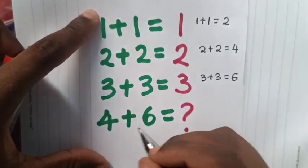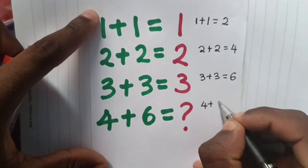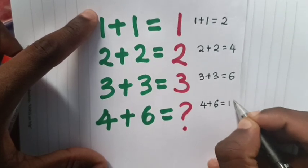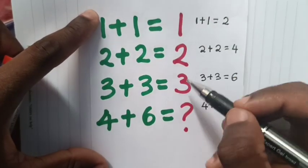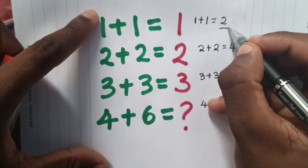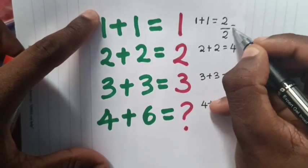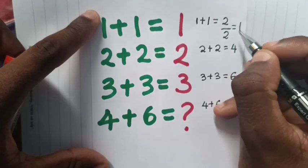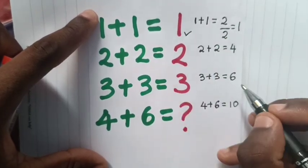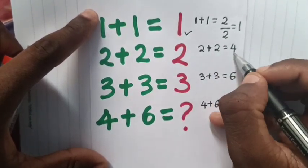4 plus 6 equals 10 in normal calculation. Let's start from here: 2 divided by 2 is 1, so you take the answer divided by 2. 1 is correct.